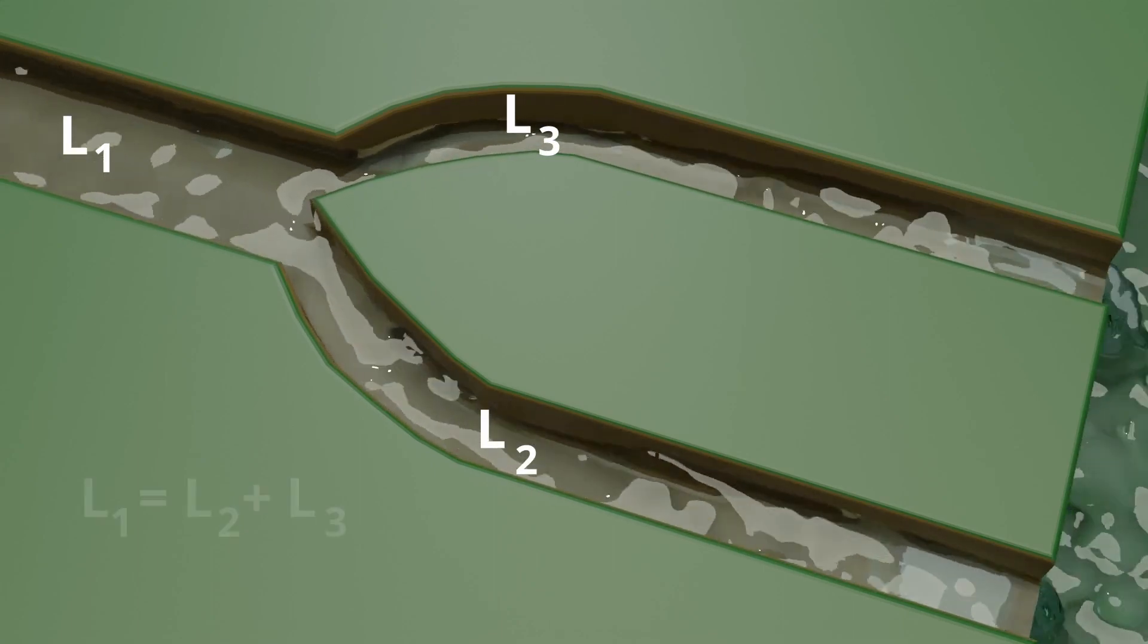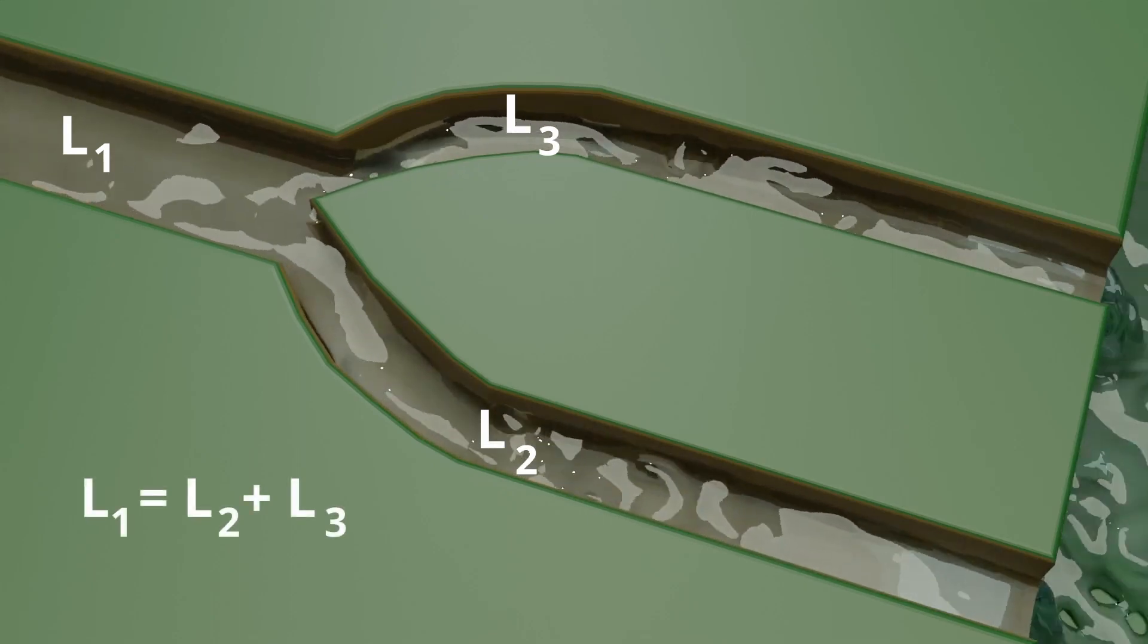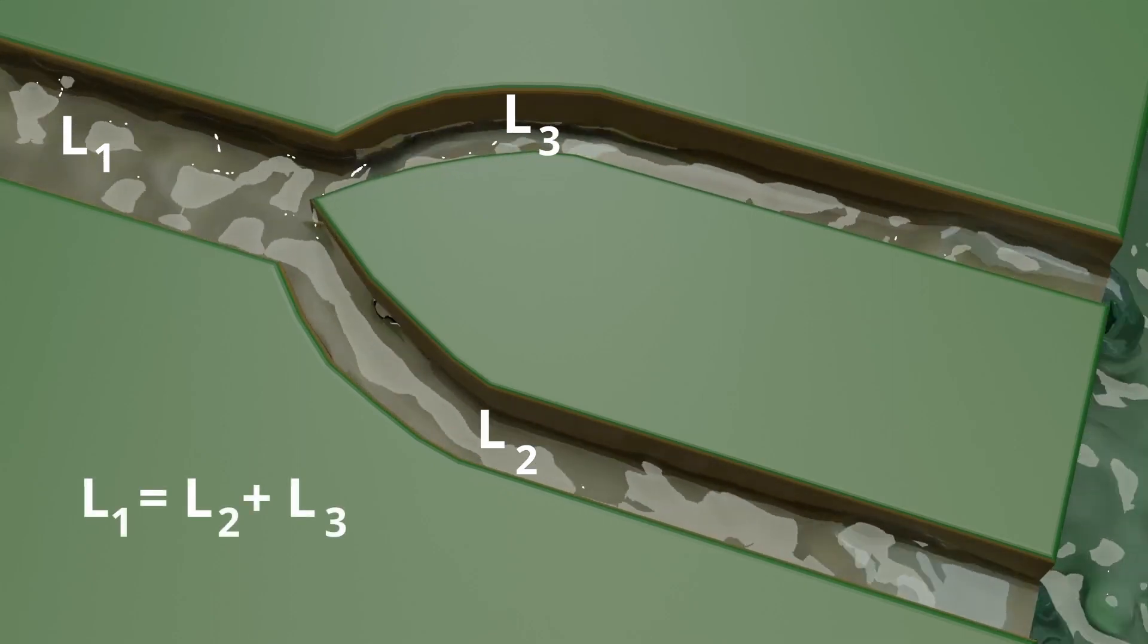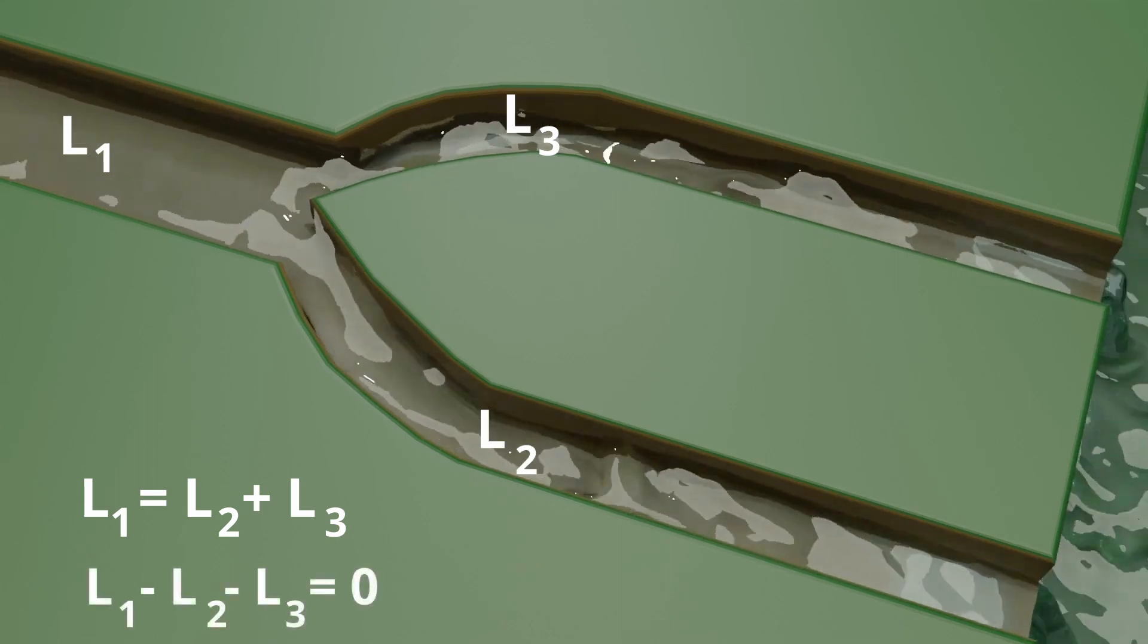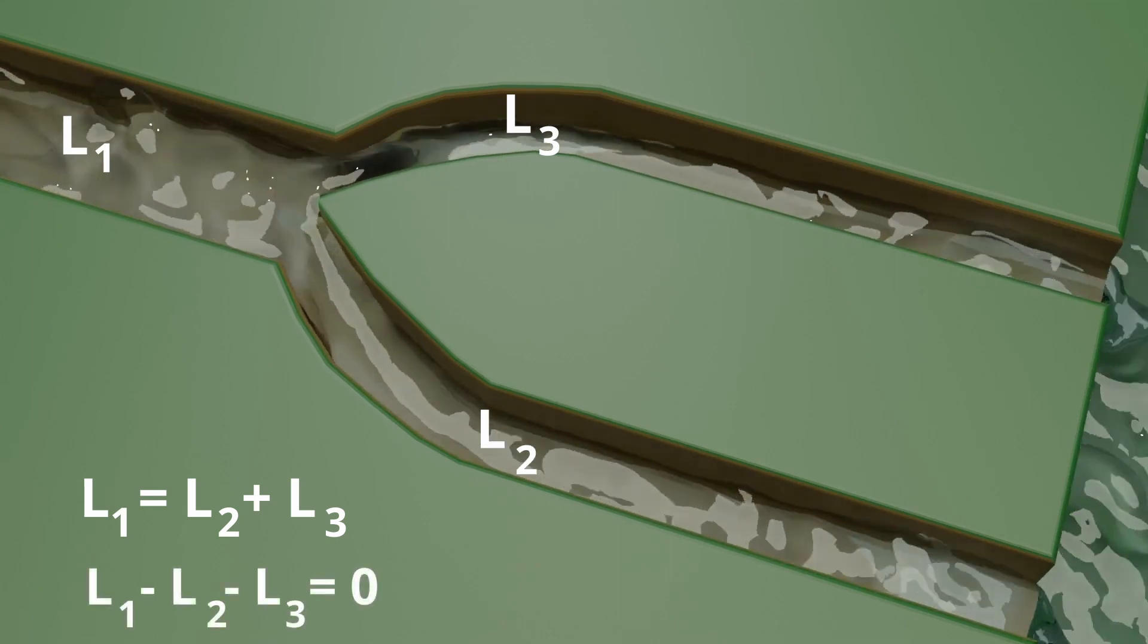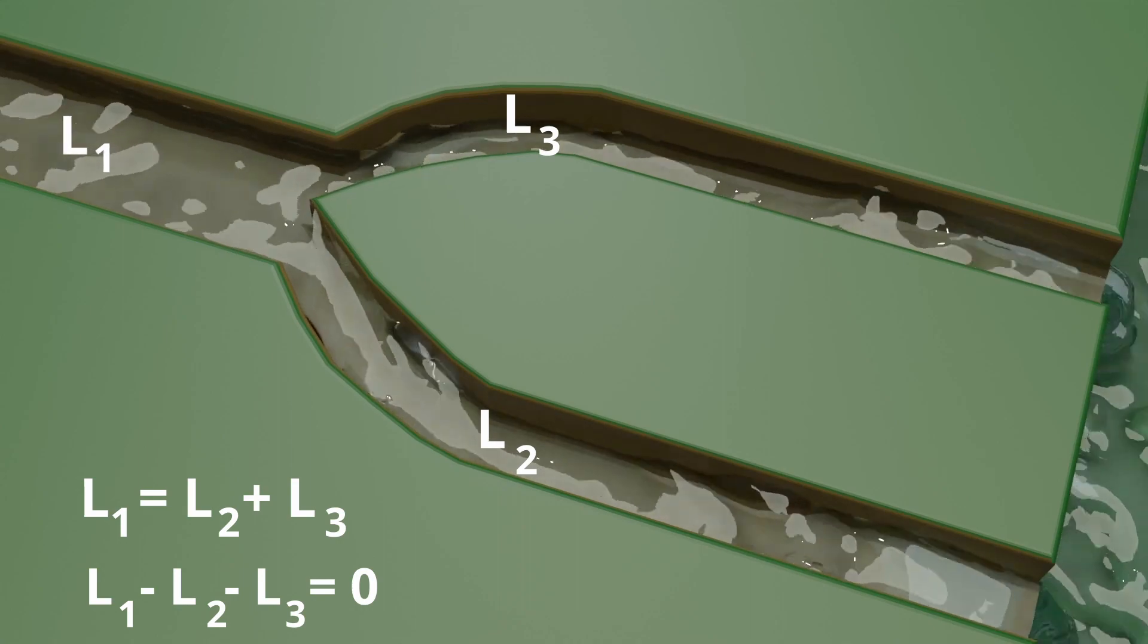Algebraically, L1 equals L2 plus L3. This can be written as L1 minus L2 minus L3 equals zero. That is, the algebraic sum is zero.